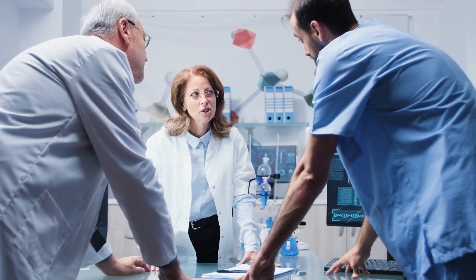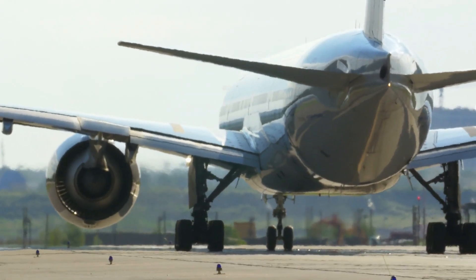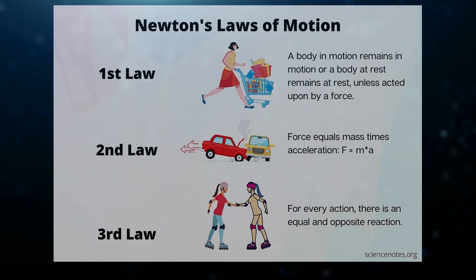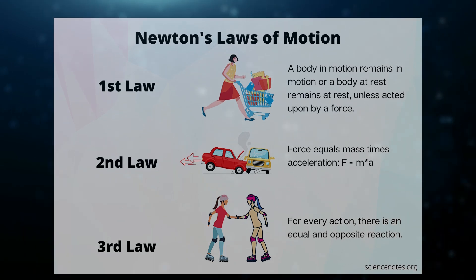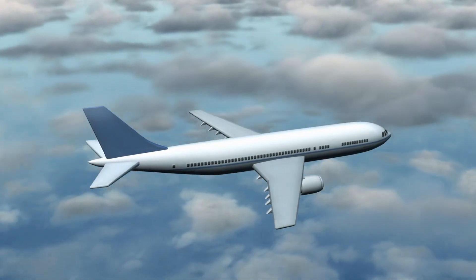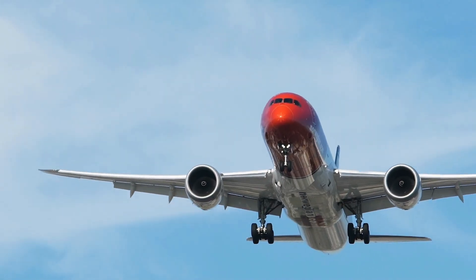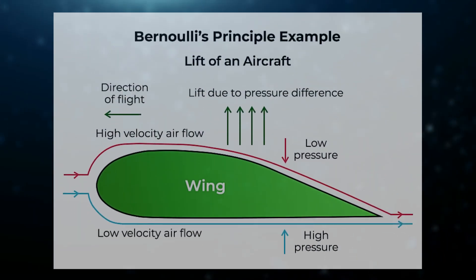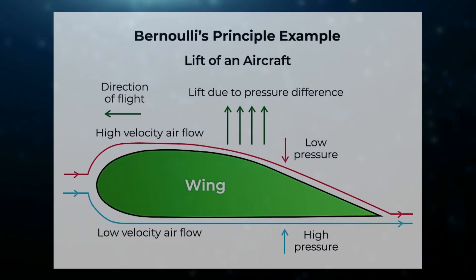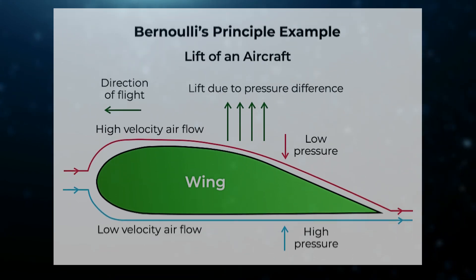Now let's talk about the scientific principles that underlie airplane design and flight. Airplanes are based on Newton's laws of motion, which describe how objects move and interact with each other. These laws explain how the airplane generates lift, how it overcomes drag, and how it maintains its direction and speed. Additionally, Bernoulli's principle is used to explain how the shape of the wings and the airflow around them generate lift.